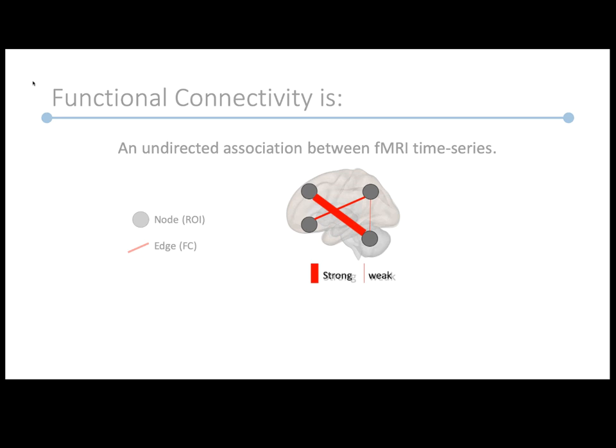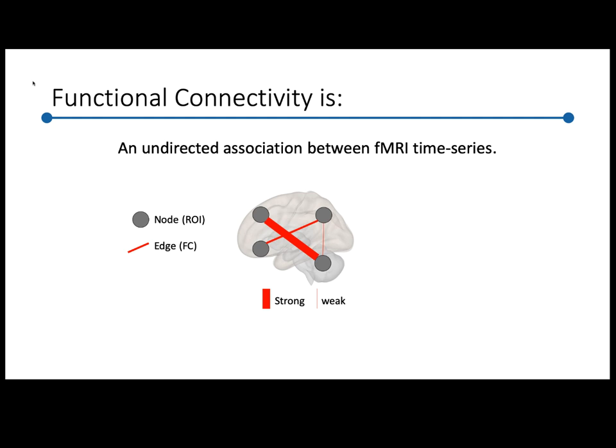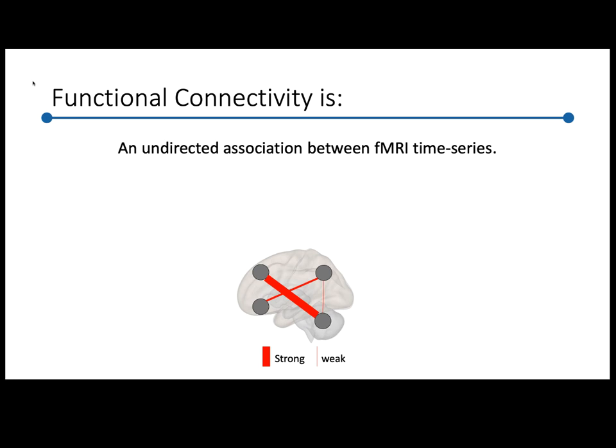Let's start by talking about functional connectivity. A nice, concise definition I like: functional connectivity is an undirected association between fMRI time series. If we think of ROIs — regions of interest — as nodes in the brain, these little circles plotted here, functional connectivity is contained in the edges between those nodes. The words nodes and edges are from graph theory, which has been used in many domains beyond fMRI.